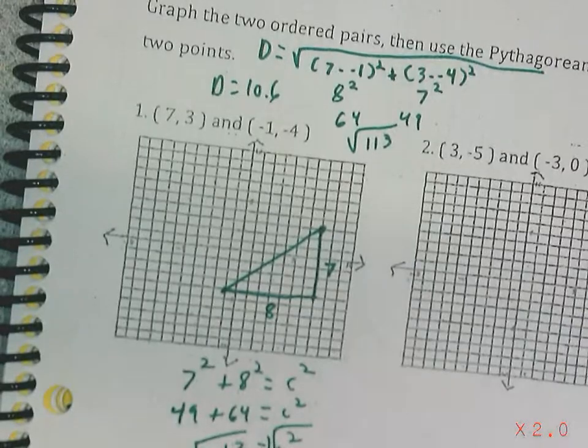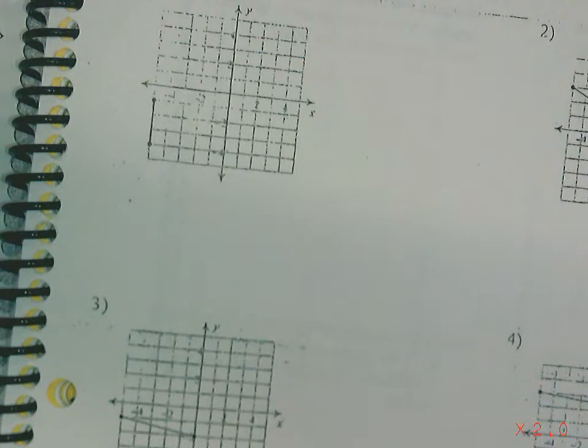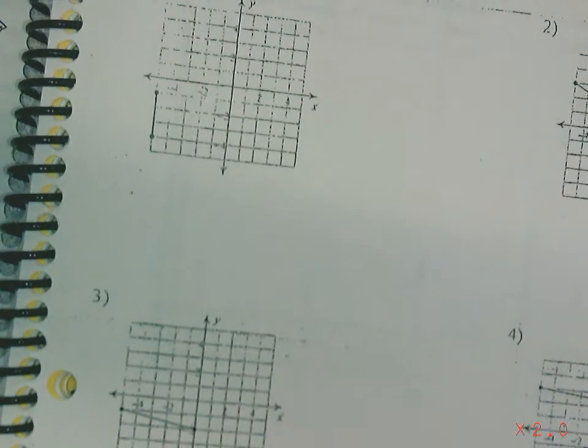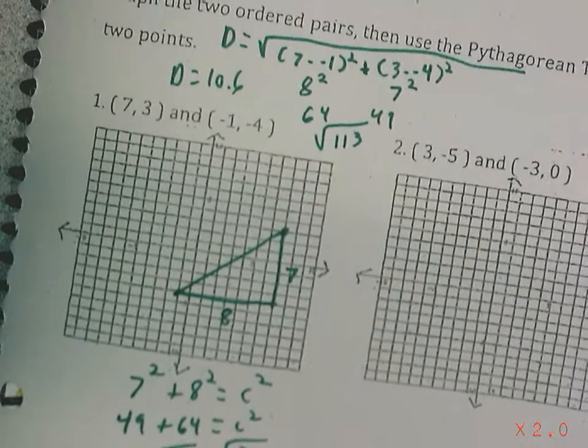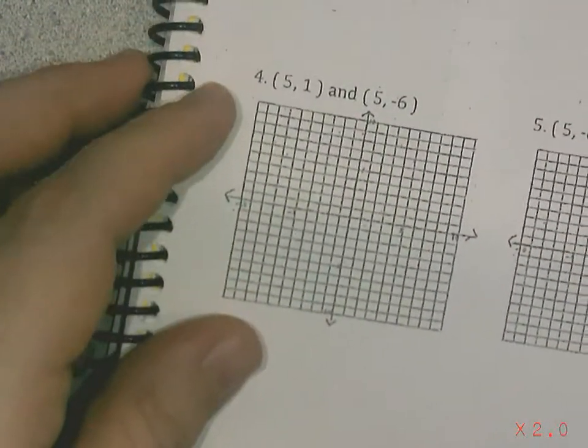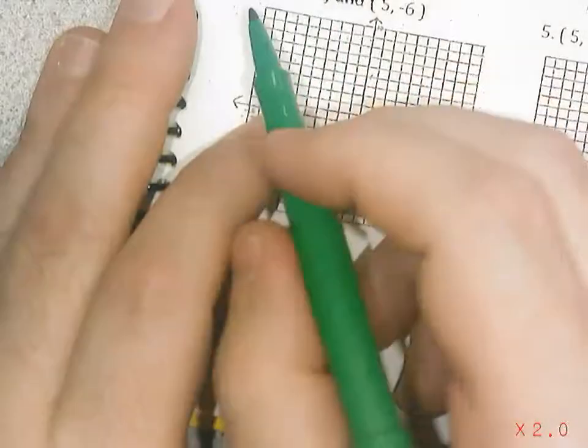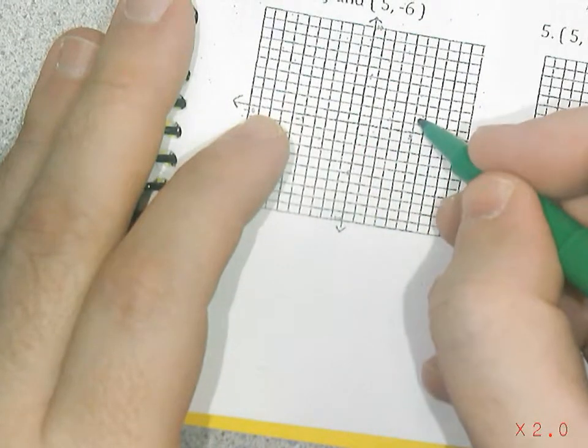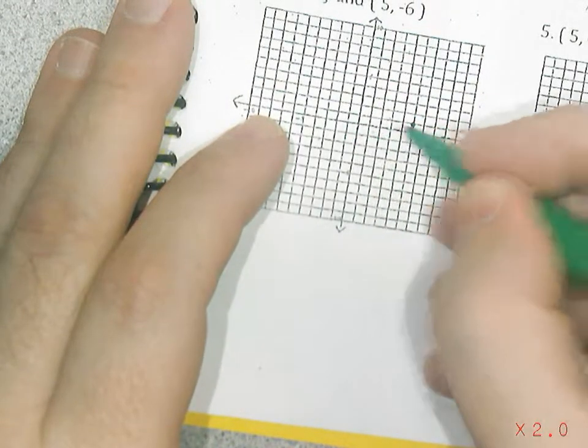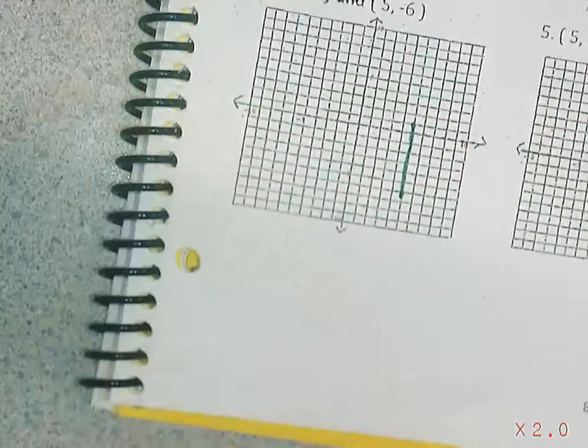I want to show you another type of problem. Let's see if I have one that does it. Hold on, let me double check these. Oh, we do. All right. So let's look at number four. Let's try plotting this on the graph first. So five and one. So five, one. And then five and negative six. Hey, look at that. It produces a vertical line.